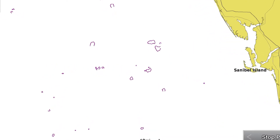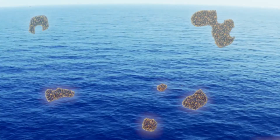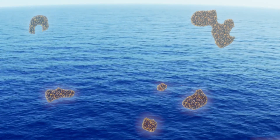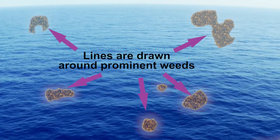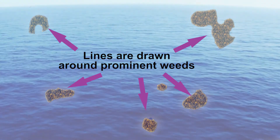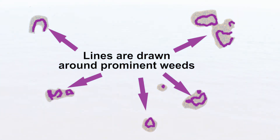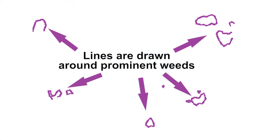The image shapes shown are not the exact representation of what you will find. Oceanographers review the image captured by satellite, then draw contour lines around areas that are determined to be weeds.